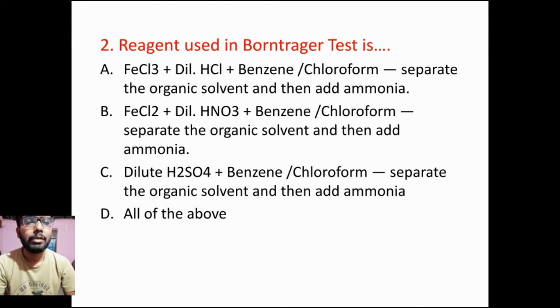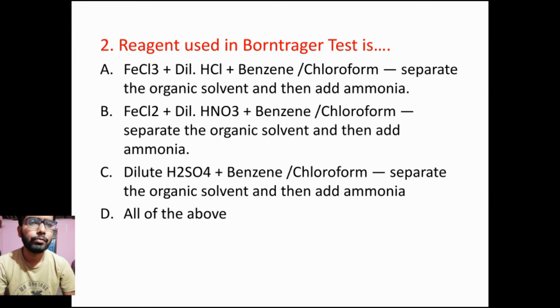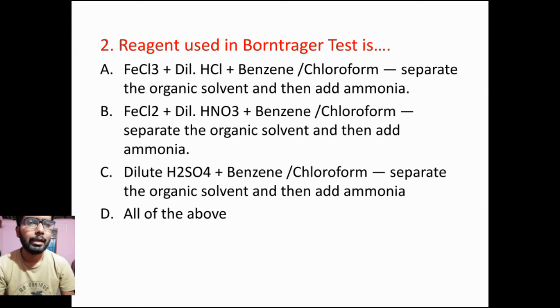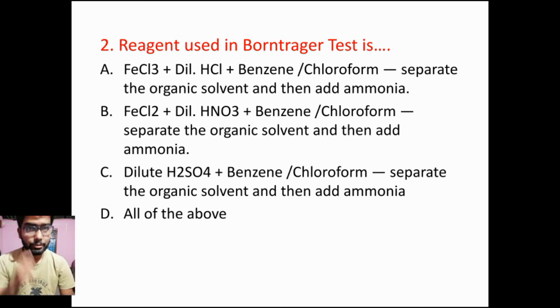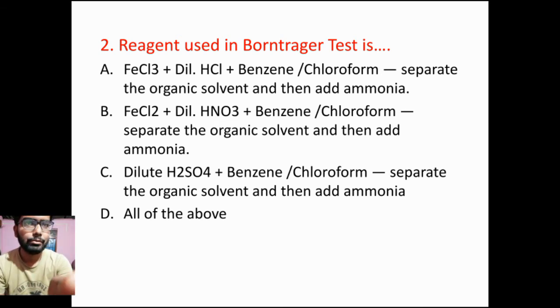Option C — dilute H2SO4 plus benzene or chloroform, then separate the organic solvent layer and add ammonia — is the particular reagent which is used in the Bornträger test.